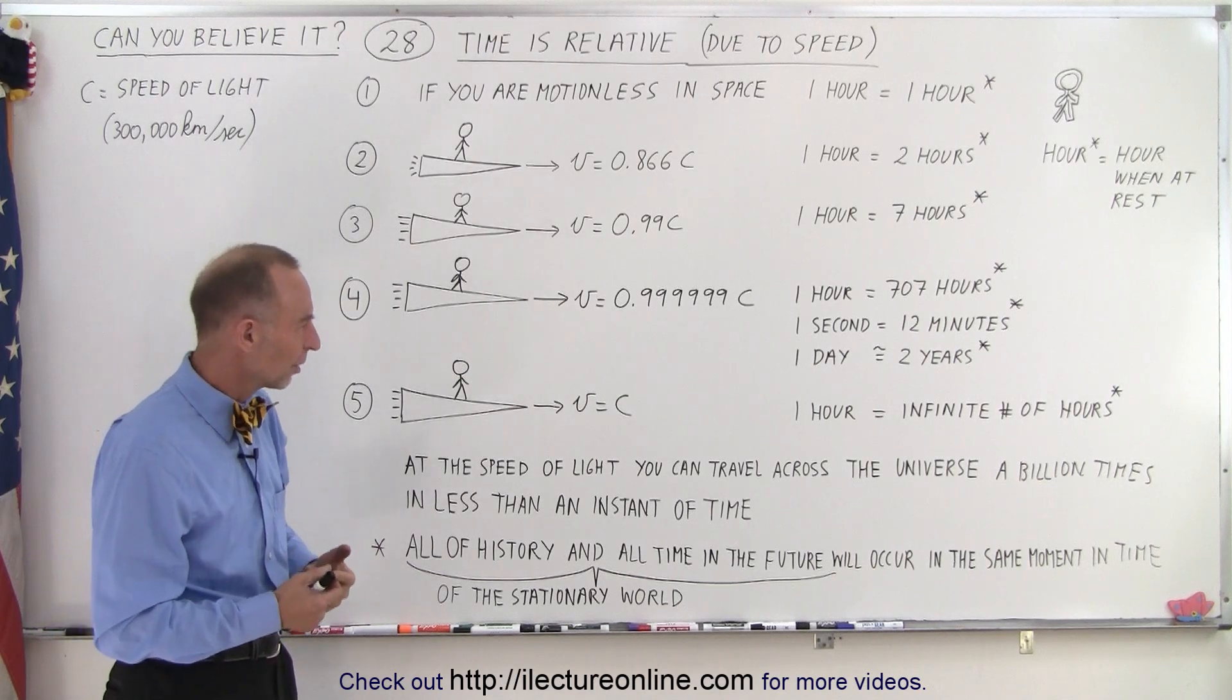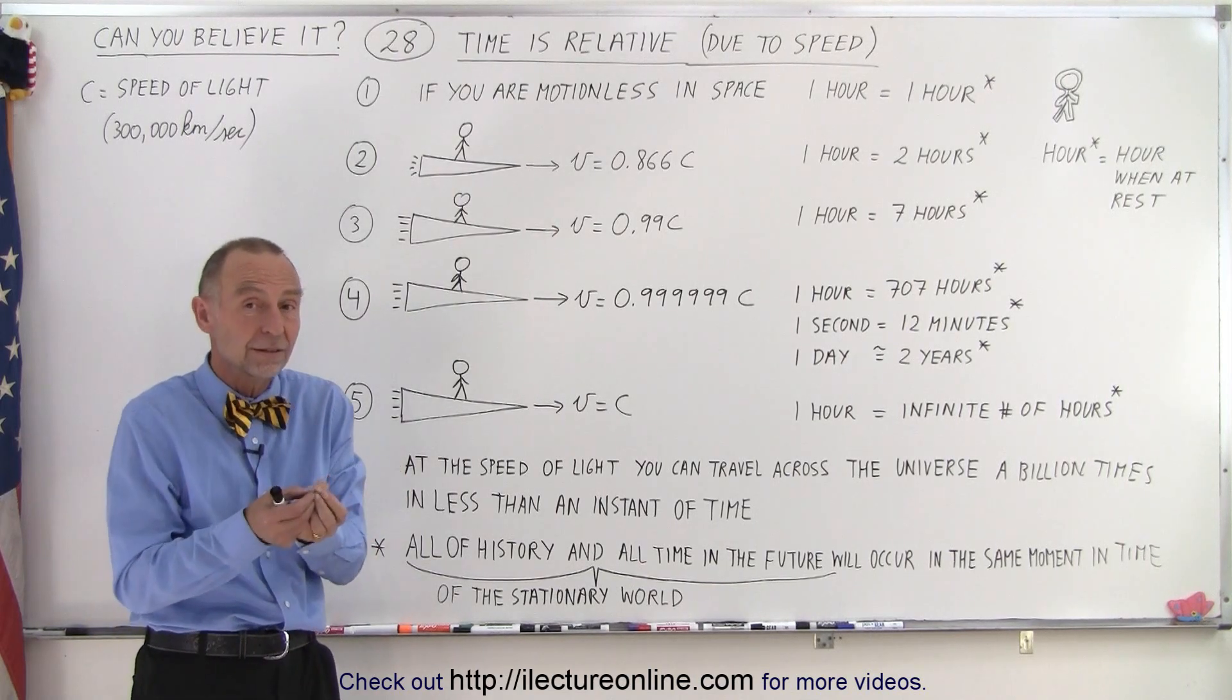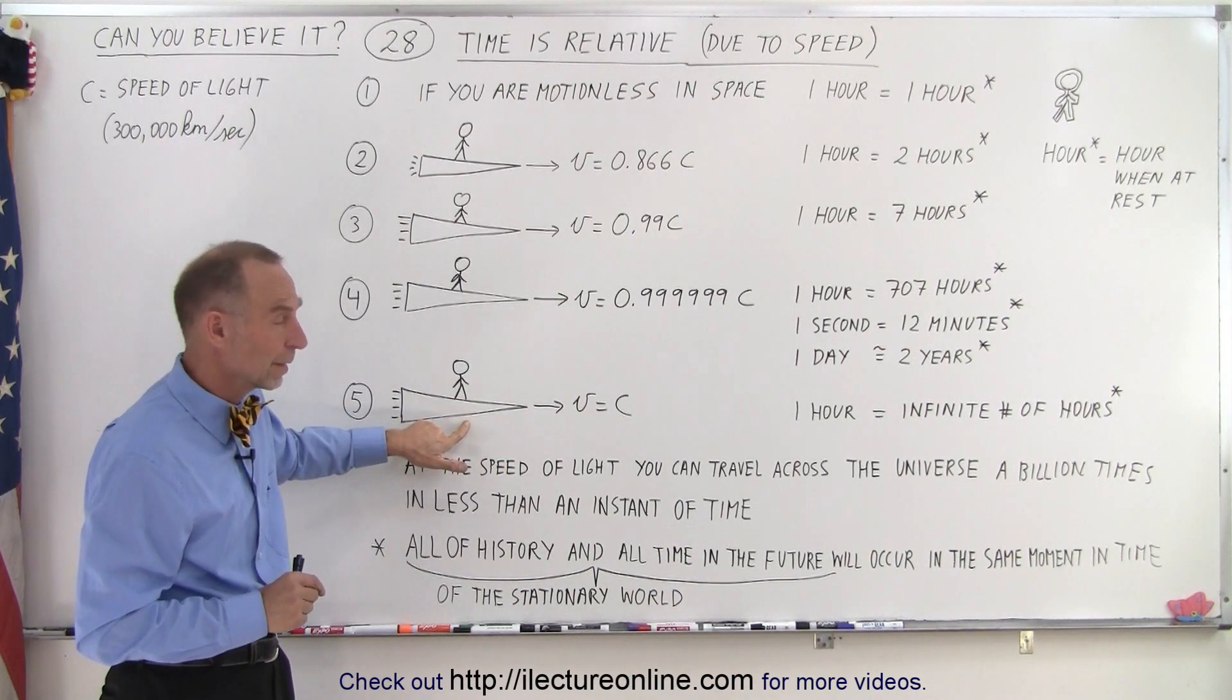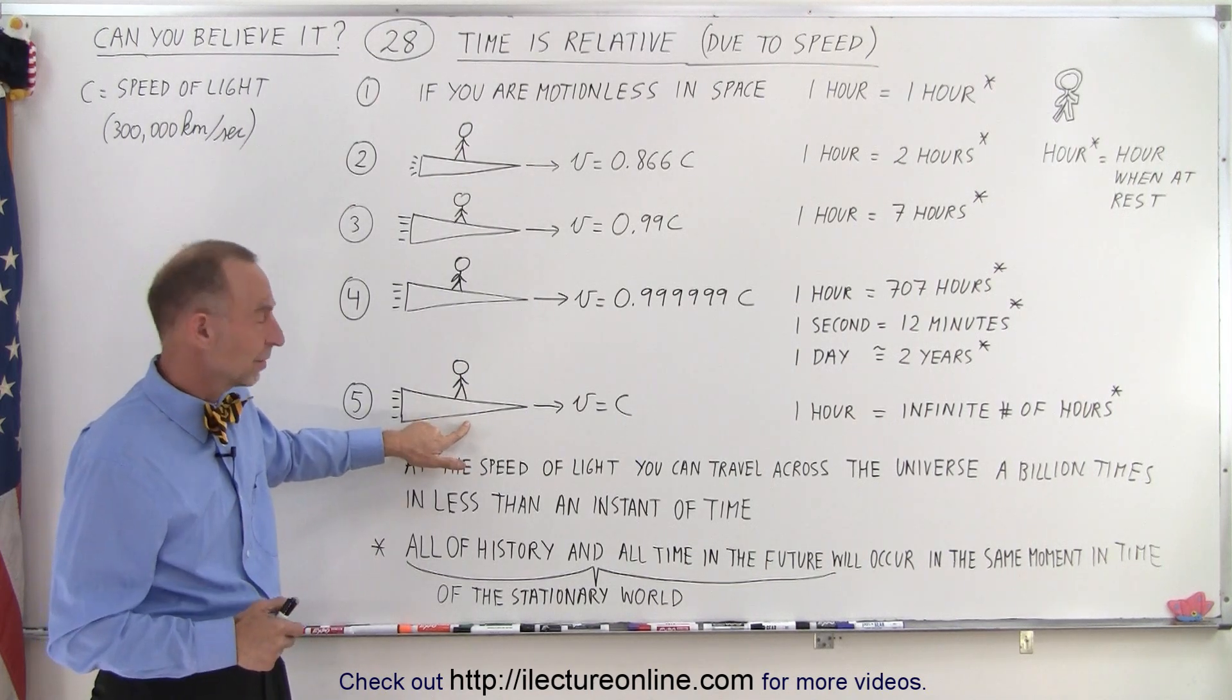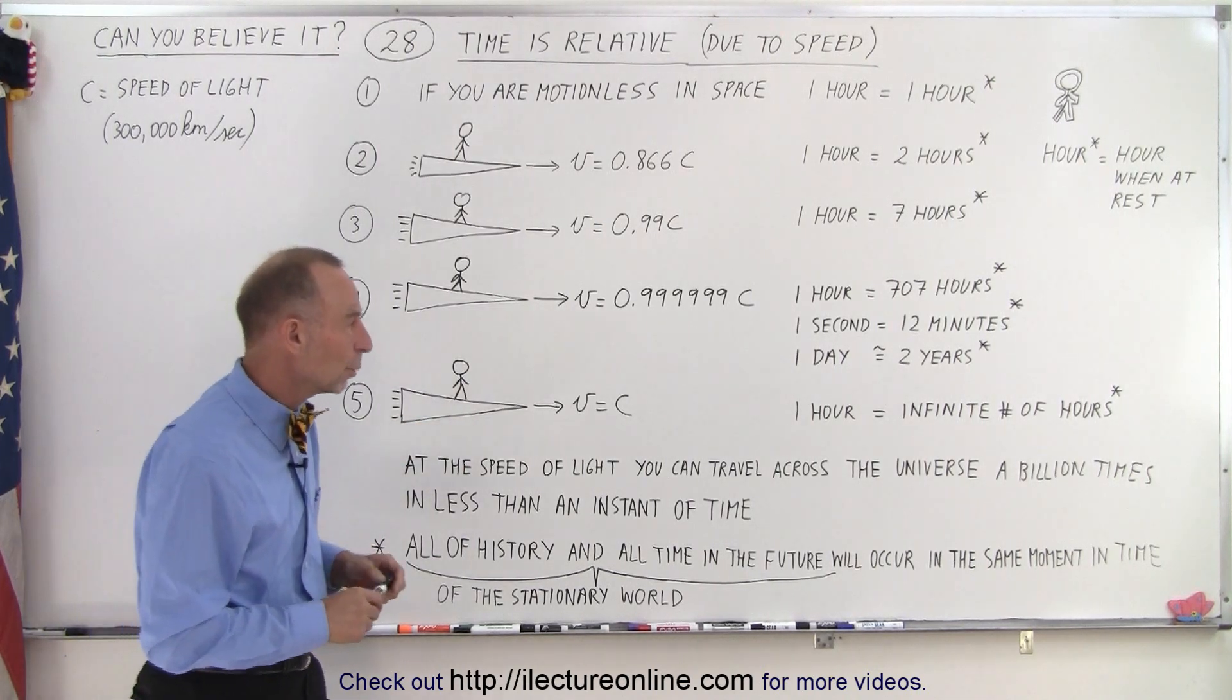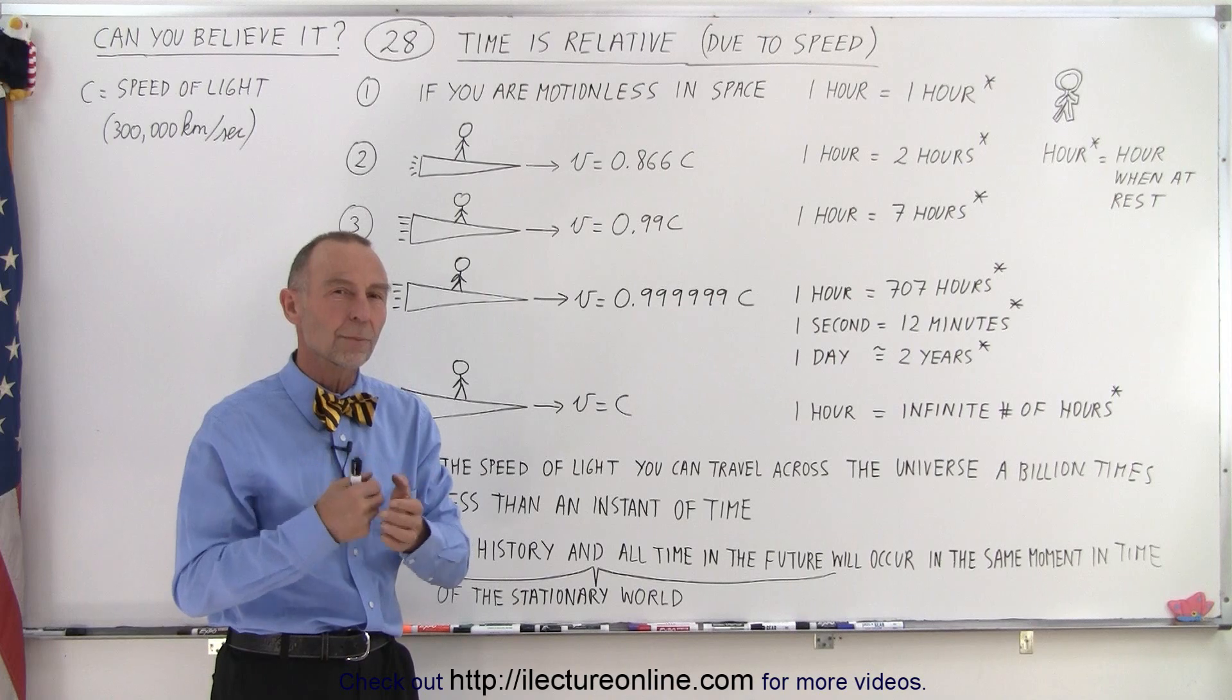So, what if we continue this? What if we can actually speed up to the speed of light? Well, what happens at that moment is that time would essentially stand still. Time will not progress for a person moving at the speed of light. Now, unfortunately, we cannot move at the speed of light. We have a physical limitation. But what if there was an entity that could move at the speed of light? Well, then one hour equals an infinite number of hours. A moment equals an infinite number of moments.